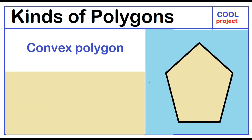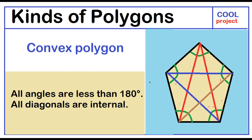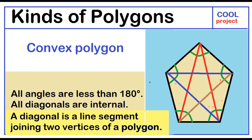Convex polygon. All angles are less than 180 degrees. All diagonals are internal. A diagonal is a line segment joining two vertices of a polygon.